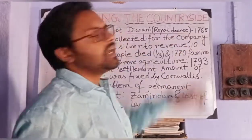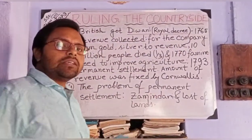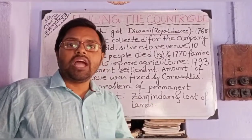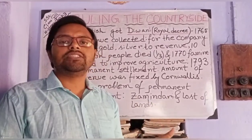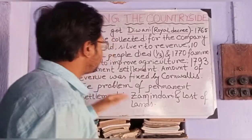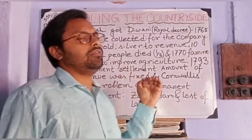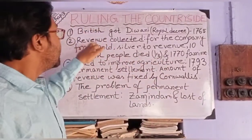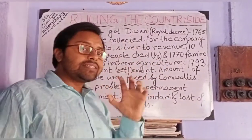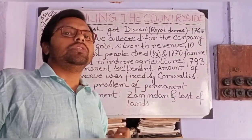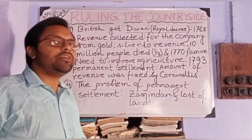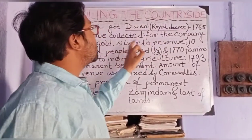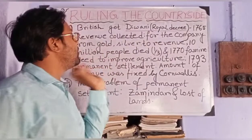They got Diwani or Royal Decree in 1765. And they appointed a Governor General of Bengal at first. The first Governor General of Bengal was Lord Cornwallis, who made the permanent settlement. Then they started to collect revenue — to collect revenue to increase their wealth for the company, from gold to silver to revenue.